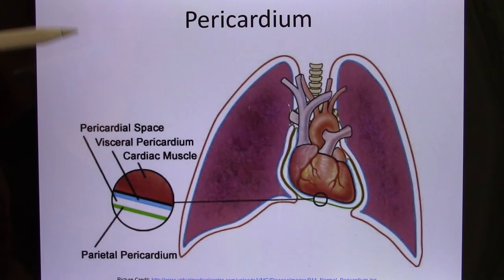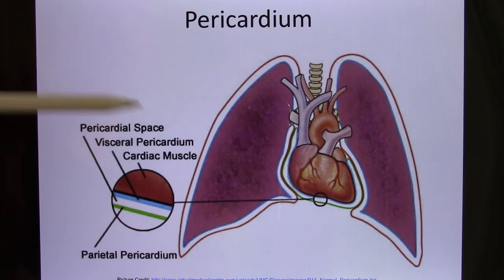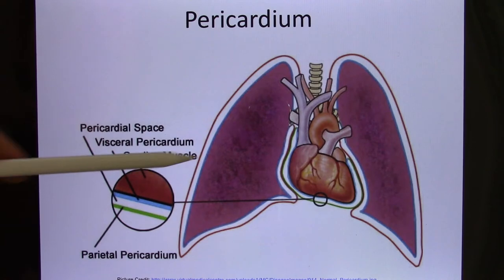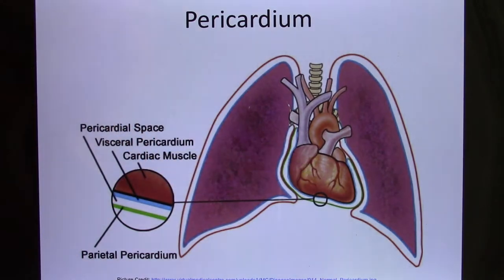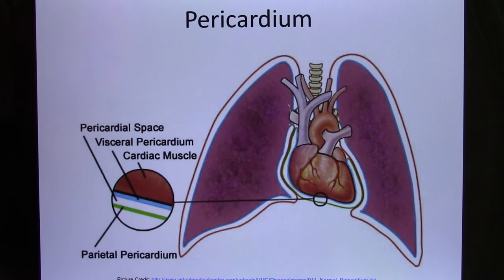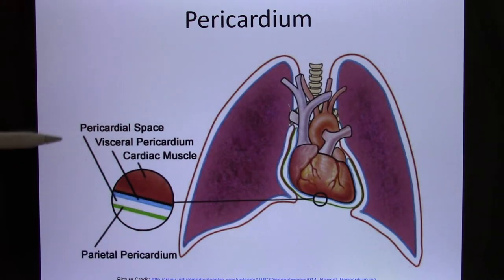This slide shows you those double membrane structures — there's a very small space between them. When we talk about heart edema, it's not water accumulated inside the heart; inside the heart you have blood. Heart edema is body fluid accumulated inside the pericardial cavity. When you have too much, the heart is covered by fluid and it's difficult for the heart to expand. That's why they have to drain the water out when there is heart edema.